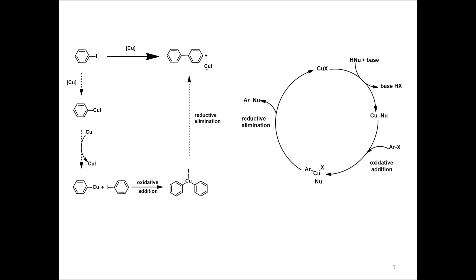Coming to the mechanism — there is a lot of controversy, with four or five mechanisms proposed and backed by computational data. Going with a common mechanism used in coupling reactions: we have a copper salt and our nucleophile with a base. The base abstracts the hydrogen from the nucleophile and removes the halogen X, giving a base·HX compound. We get a Nu⁻ species, which then attacks the copper while X leaves, forming a copper-nucleophile (organocopper) bond.